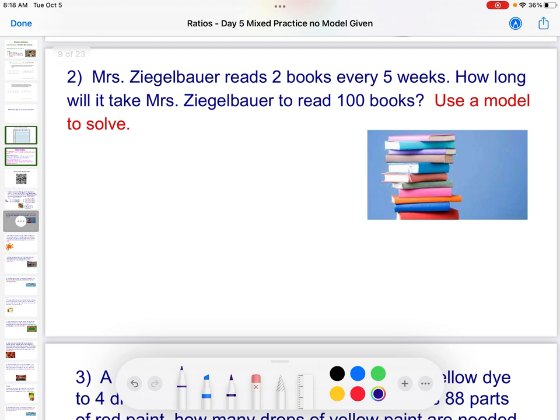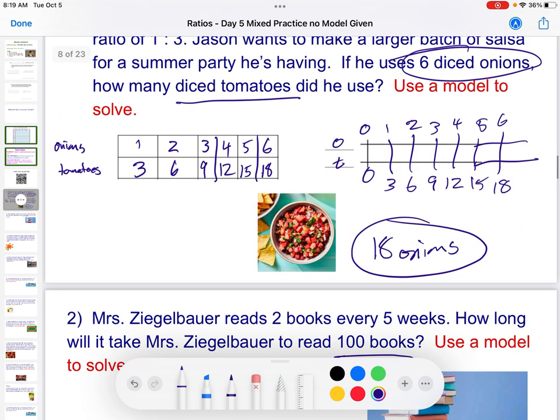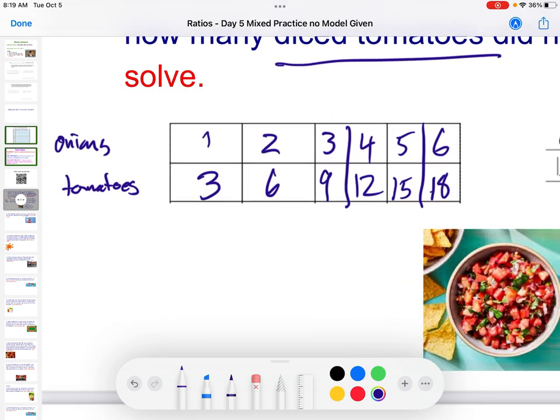Mrs. Ziegabauer reads two books for every five weeks. How long will it take Mrs. Ziegabauer to read 100 books? So in the last one, when we take a look at this, this worked for this because it's small. I can just go up by one, one, one, one, one, three, three, three, three, and three.